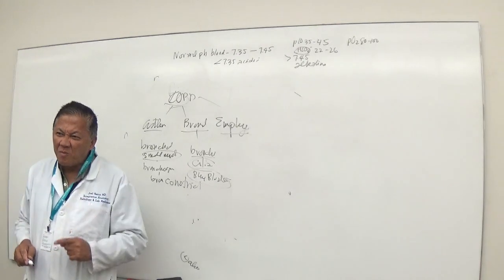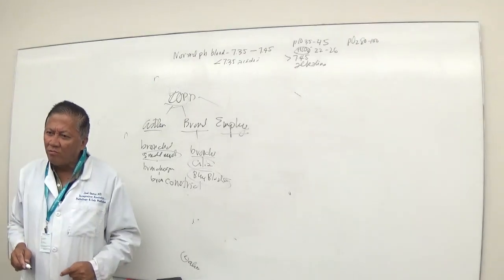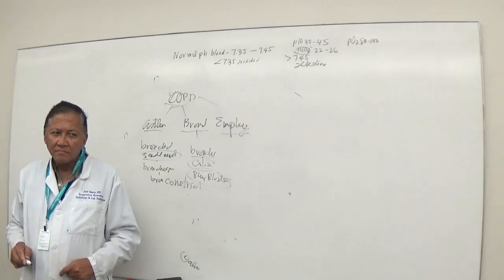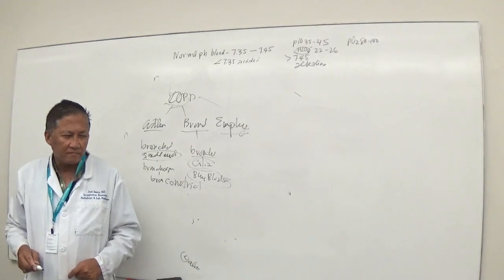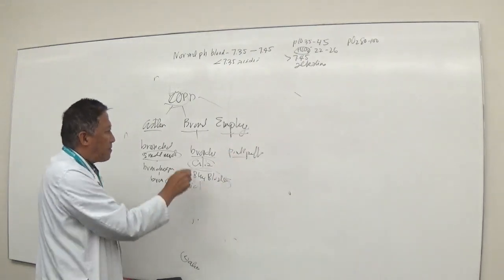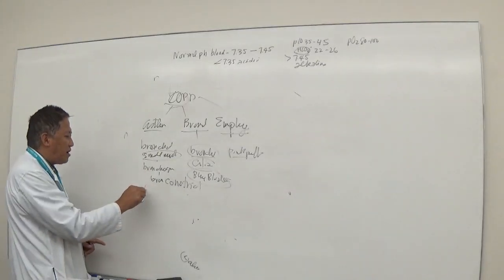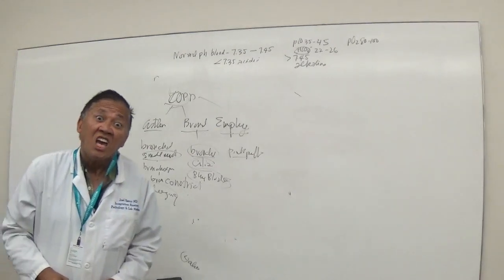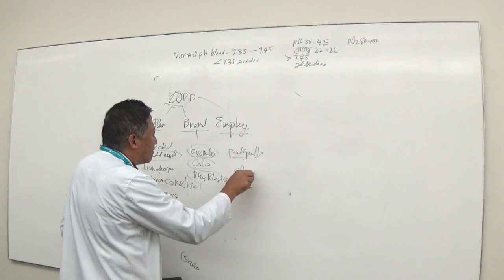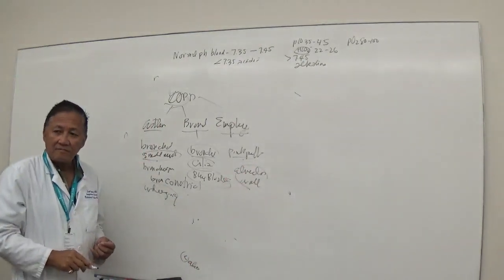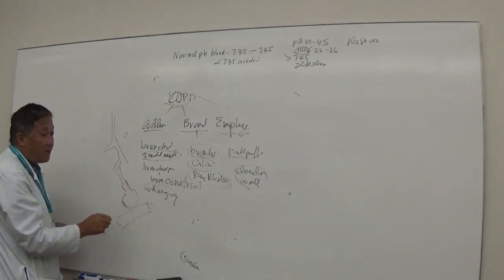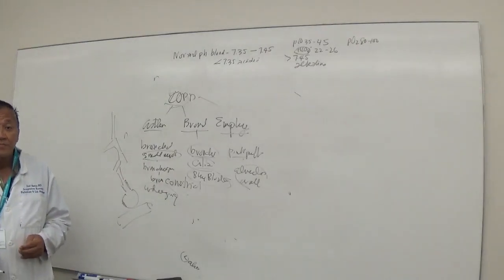That's the definition. That's the blue bloater. And this is the pink puffer. If the problem is in the bronchi, if the problem is in smooth muscles, it's broncospasm and bronchopulmonary constriction leading to wheezing. Pink puffer - the problem is where? Wall of the air sac. Remember: trachea, bronchus, secondary bronchus, tertiary bronchus, bronchioles with smooth muscles, air sac, pulmonary capillaries. The problem is in the wall of the air sac, the alveolar wall.